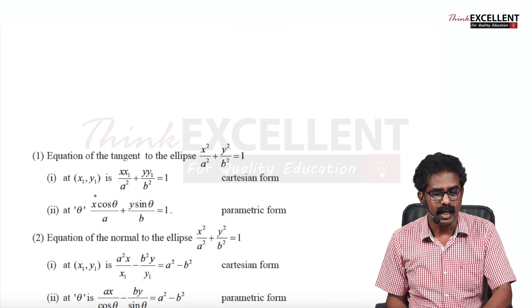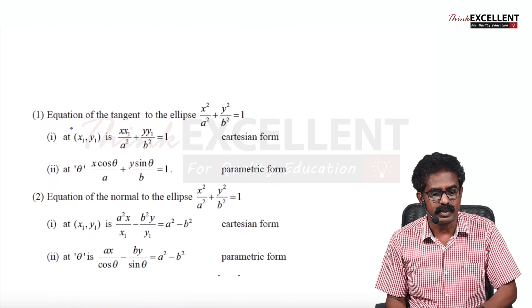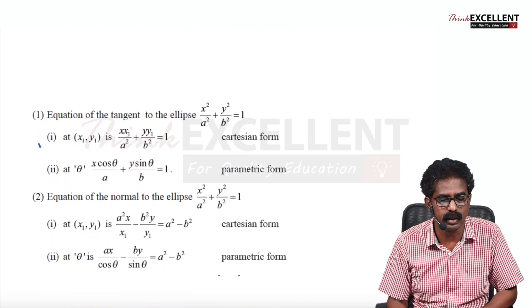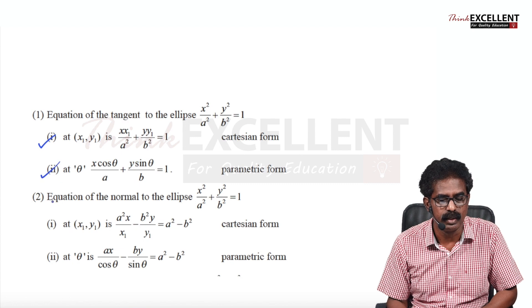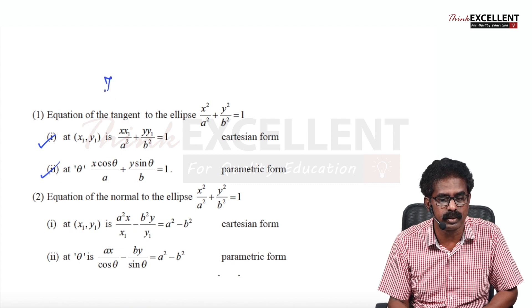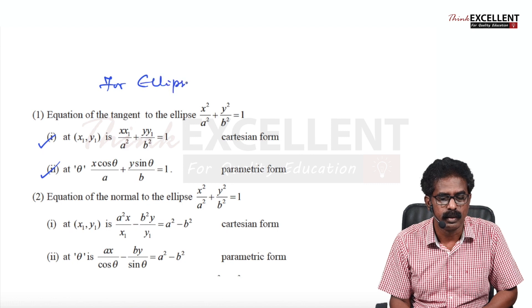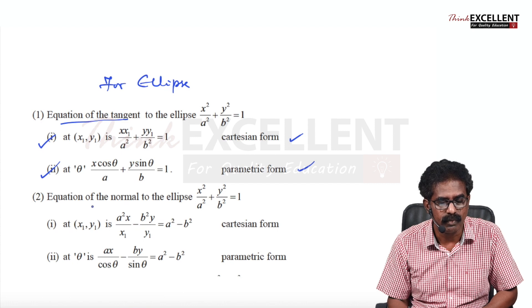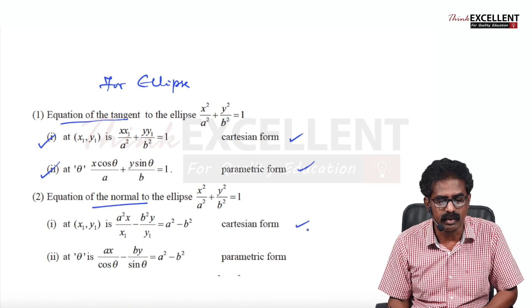That is for parabola. Like that for ellipse — equation of tangent to ellipse: Cartesian form and parametric form; equation of normal to ellipse: Cartesian form and parametric form. Same way for hyperbola: equation of tangent in Cartesian form (change X² to XX₁ like that) and parametric form — you have to study that. Equation of normal to hyperbola: Cartesian form and parametric form.